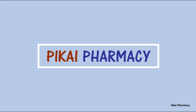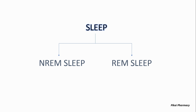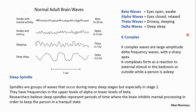Welcome to Pikari Pharmacy. Today we're going to discuss the sleep cycle. Broadly, sleep is of two types: NREM sleep, which stands for non-rapid eye movement sleep, and REM sleep, which stands for rapid eye movement sleep. Before going into the different stages of the sleep cycle, we need to learn about the different electrical waves of the brain obtained through electroencephalograph, known as EEG.